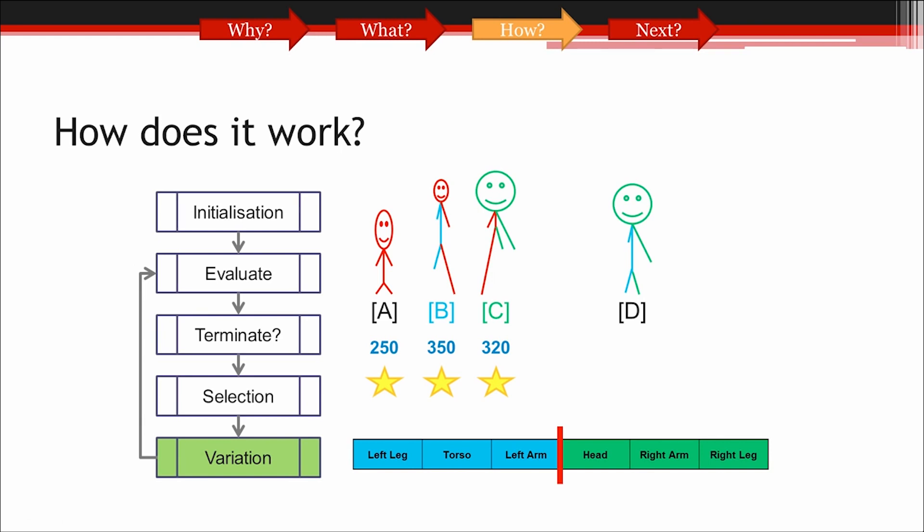Here, we can see parent B and parent C have produced offspring D. I've colour coded the parts of the stick figures to indicate what has been passed on to the offspring, and which parent it's come from.